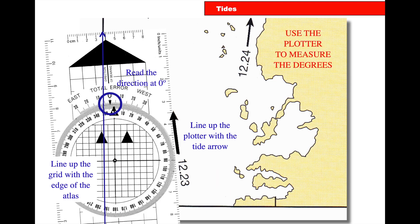We can put our plotter directly next to the arrow, so the big arrow on our plotter goes the same direction as the tidal stream arrow, and the little arrow on our plotter goes directly north. We move the dial around the middle and we can read off on our plotter the direction of the tide, and we can put that straight onto our chart when doing calculations.